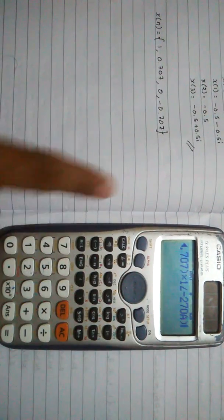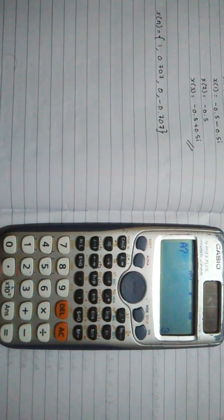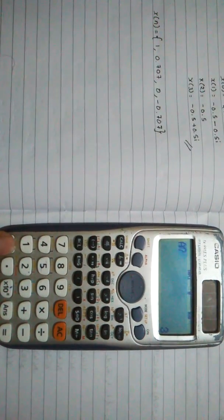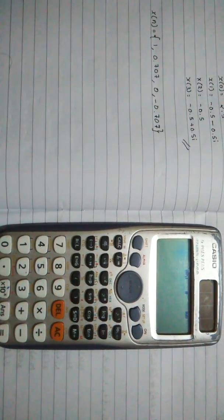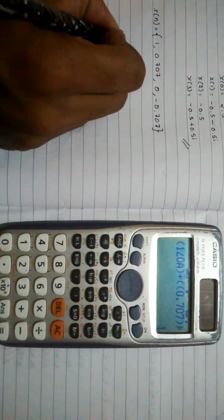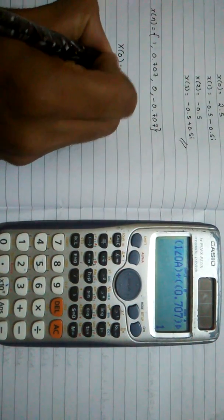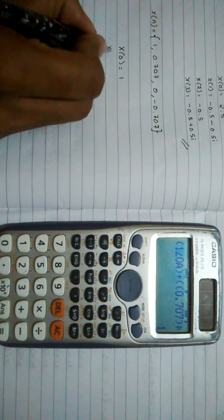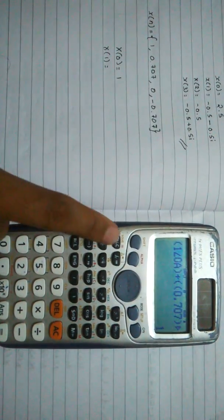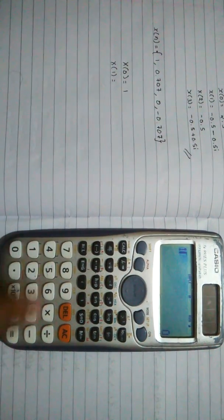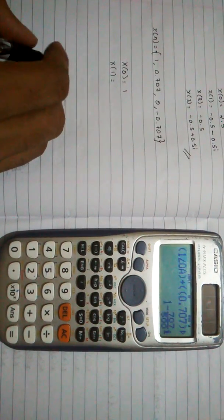And then to calculate the values, hit calculate. And then for x of 0, hit 0 and then equals. So x of 0 equals 1. And then x of 1 equals, so calculate and then 1 and then equals. So x of 1 is equal to 1 minus 1.414i.